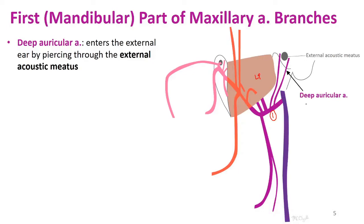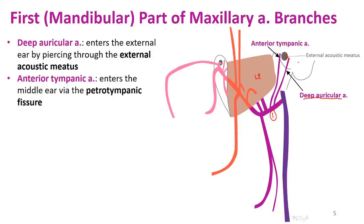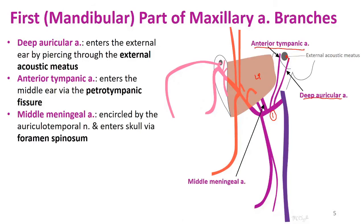The first branch is the deep auricular artery, which pierces through the external acoustic meatus to supply the area. The second is typically the anterior tympanic artery, which passes near the ear and enters the middle ear through the petrotympanic fissure, found on the posterior edge of the mandibular fossa on the temporal bone.